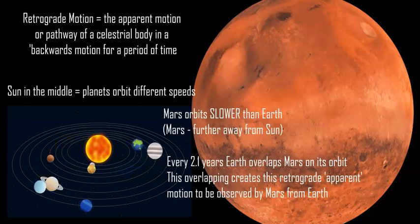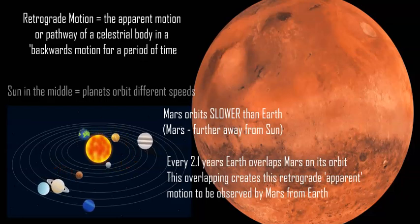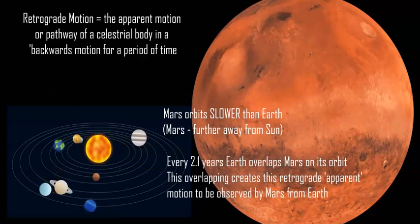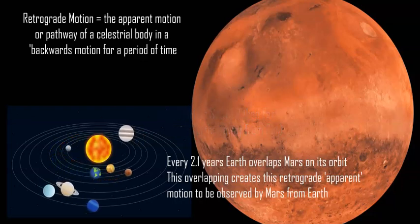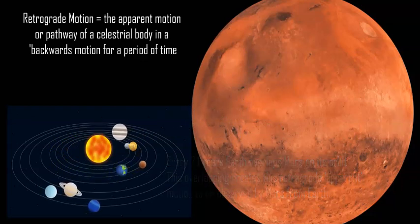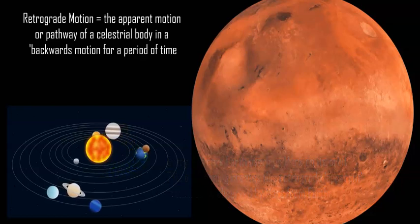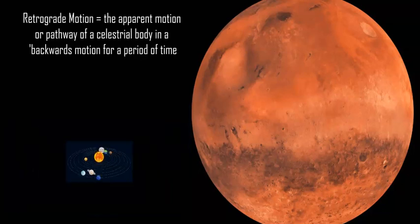The main planet we observed was Mars. Mars goes through retrograde motion every 2.1 years, moving backwards against Earth's movements for a period of months. Rather than going east, it goes west for a few months, then comes back east, creating a retrograde loop.